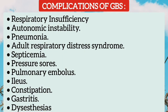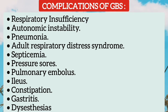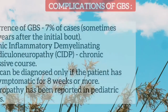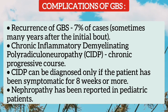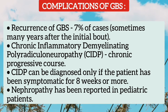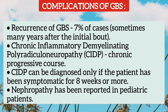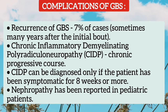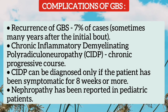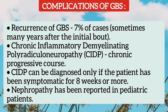Complications of GBS include respiratory insufficiency, autonomic instability, pneumonia, adult respiratory distress syndrome, septicemia, pressure sores, pulmonary embolus, ileus, constipation, gastritis, and dysesthesia. Recurrence of GBS occurs in 7% of cases, sometimes many years after the initial bout. Chronic inflammatory demyelinating polyradiculoneuropathy (CIDP) follows a chronic progressive course and can be diagnosed only if the patient has been symptomatic for 8 weeks or more. Nephropathy has also been reported in pediatric patients.